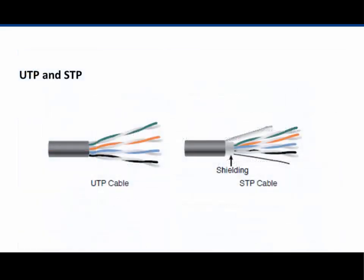Here is a picture of UTP and STP cables. Notice the twisted pairs — there are 8 wires, 4 pairs with twists, creating the cancellation effect. You can see the outer shielding around the pairs on the STP cable. Notice the ground wire as well.